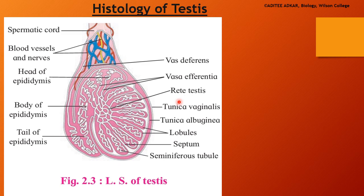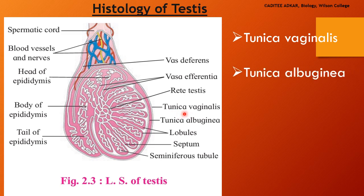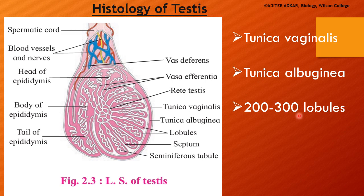Now let us understand the histology of the testis — that is, the different kinds of tissues and cells present inside the testis. Let us study the longitudinal section, also known as the vertical section, of the testis. The outermost covering of the testis is known as the tunica vaginalis. Next to the tunica vaginalis, there is another covering known as the tunica albuginea. The tunica albuginea enters inside the testis and divides it into several lobules. Inside a testis, we may find about 200 to 300 lobules.